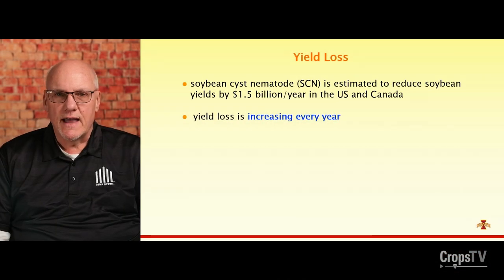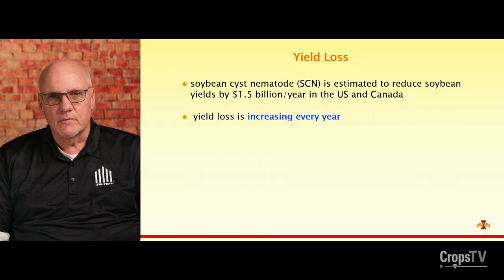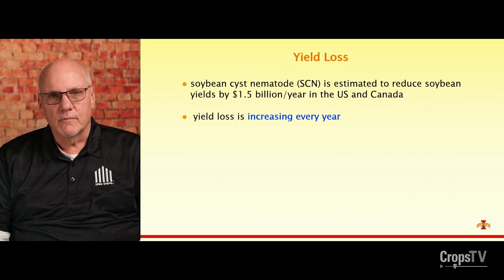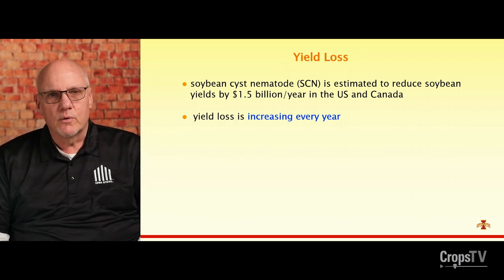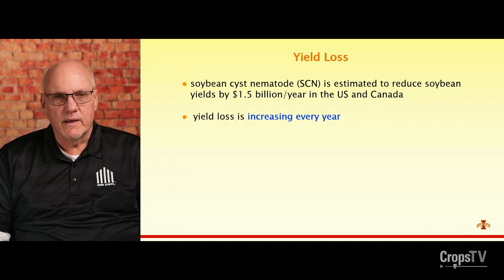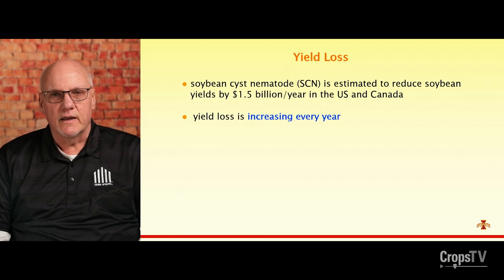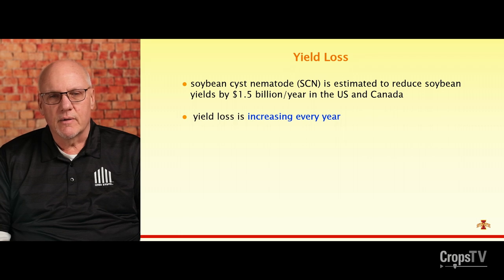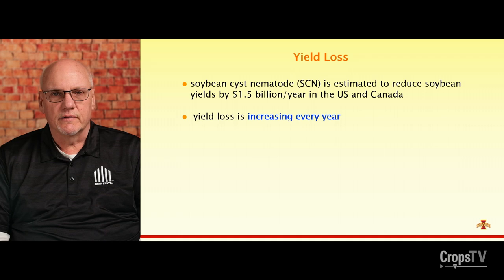Soybean cyst nematode for the last 20 to 25 years has been annually identified as the most damaging pathogen of soybeans, and the estimate of farmer yield loss is $1.5 billion a year. That number has been verified with statistical analyses, and it's a real number for the production area of the United States and Canada. I will show you data from Iowa indicating we're actually experiencing increasing yield loss every year.